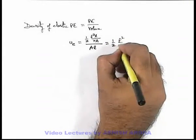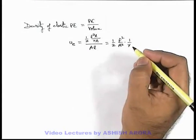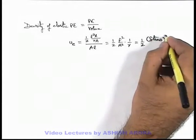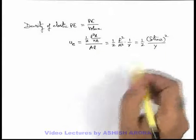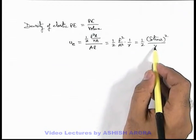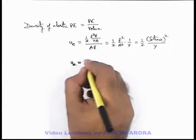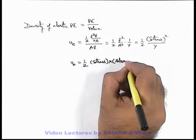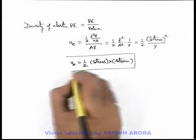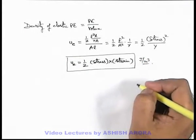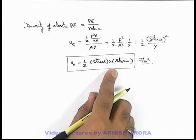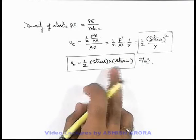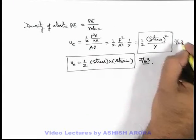This gives us half of F²/A² multiplied by the reciprocal of Young's modulus. Since F/A can be written as stress, this becomes half of stress squared divided by Young's modulus. Since Young's modulus equals stress by strain, the elastic potential energy density can also be written as half of stress multiplied by strain. Units used are joule per meter cube. Either of these relations — half of stress²/Y or half of stress times strain — can be used for numerical applications.